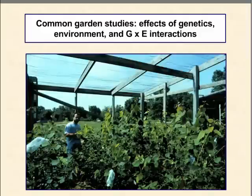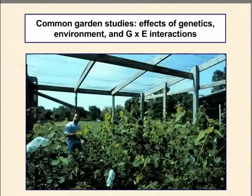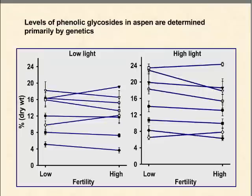My group has done a number of studies in controlled environments and in the field looking at genetic and environmental and gene-by-environment effects on expression of defense in Aspen. We've considered light levels, soil fertility, drought, prior damage, CO₂ levels, ozone levels, and a whole host of various environmental factors and their consequences for chemical composition of Aspen. In each of these summary slides, each line represents a different genotype or clone.